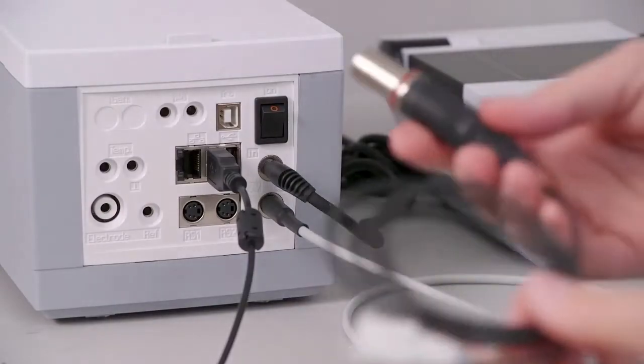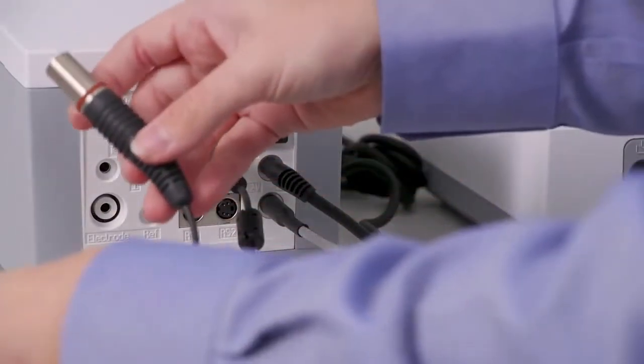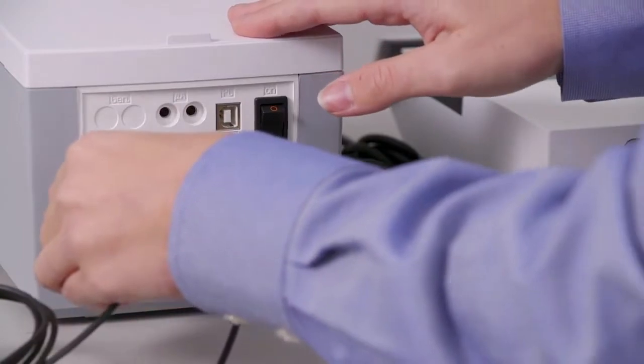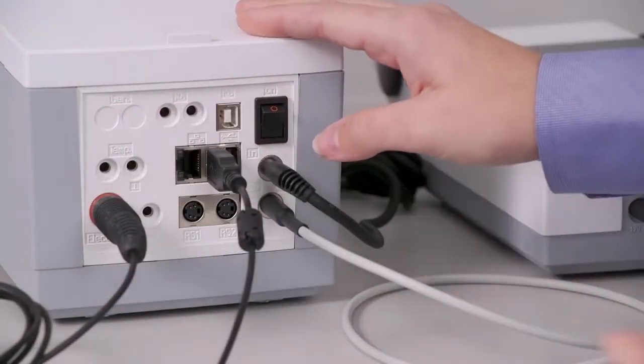The last thing to set up here is the electrode cable. We'll just plug that into the DIN port on the bottom left hand side. Once that's done you're ready to turn it on.